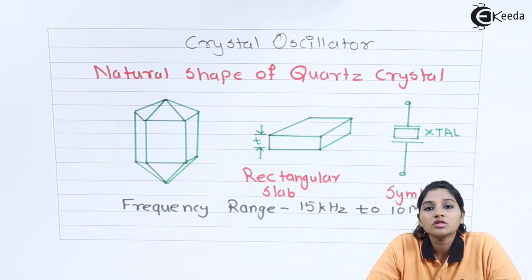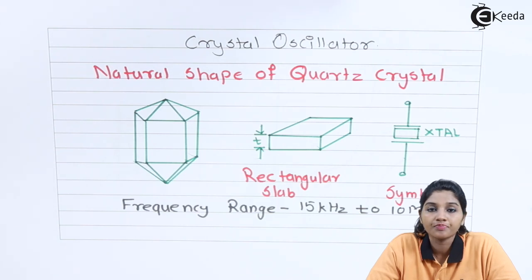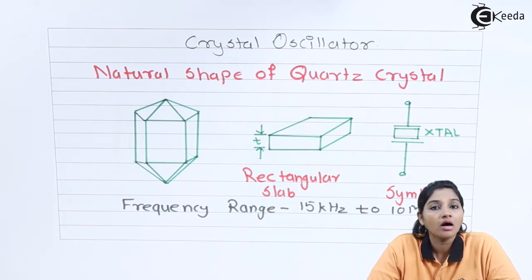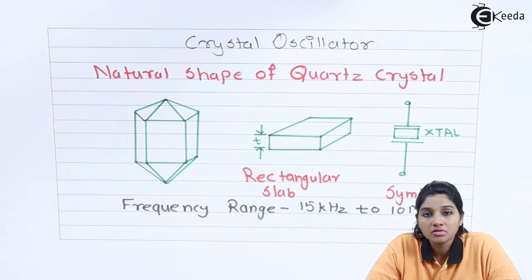Other than quartz, the other materials used for construction of crystal oscillators are Rochelle salt and Tourmaline. But the most commonly used crystal oscillator material is quartz crystal because it is inexpensive and easily available. Another reason is that its properties lie between those of Tourmaline and Rochelle salt. That is why quartz crystal is the most commonly used material.